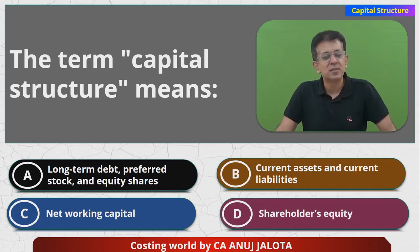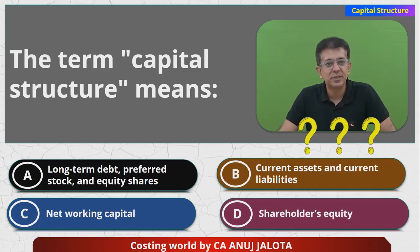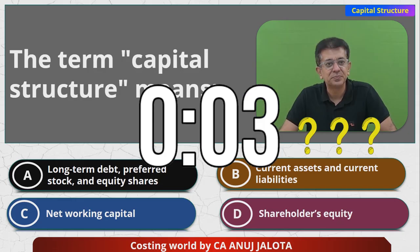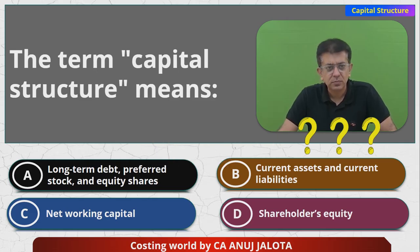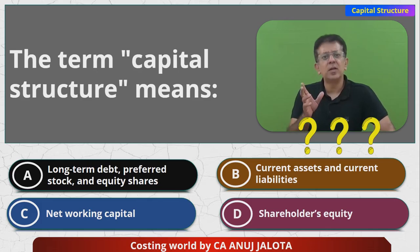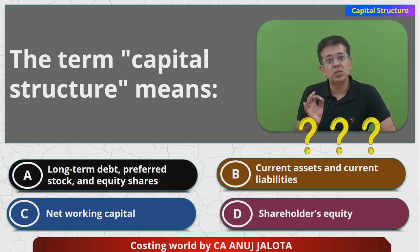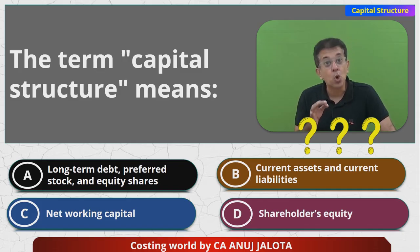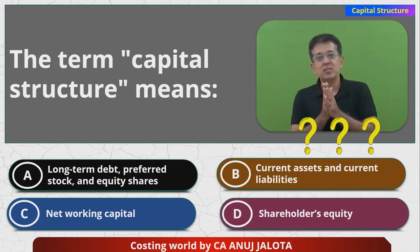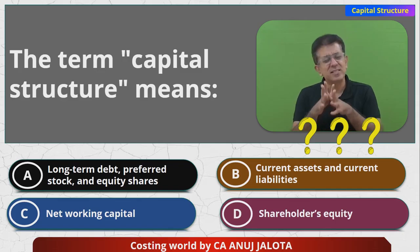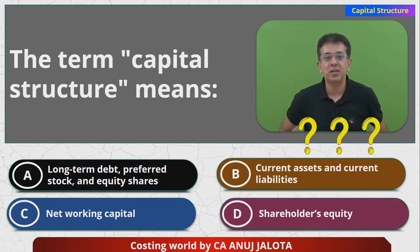I guess I've already told the answer, but still do comment the correct answer. Now, financial structure means your liability side — that includes long term sources of finance as well as short term sources of finance, like current liabilities and so on.